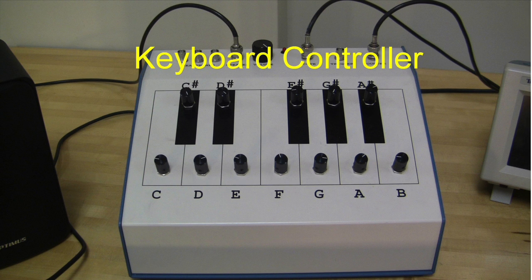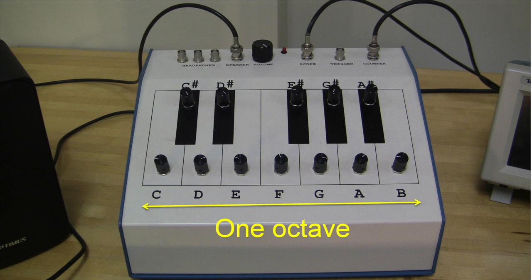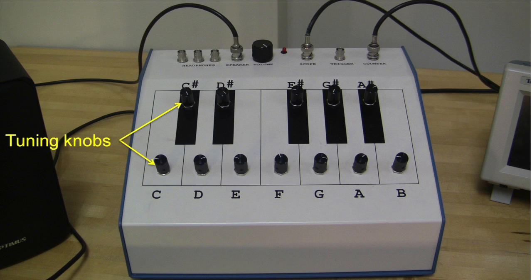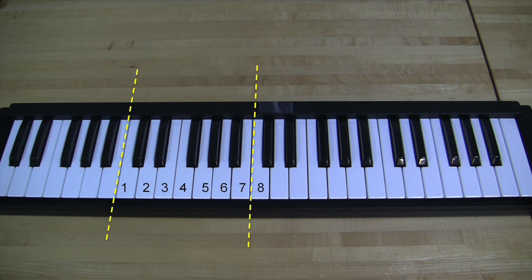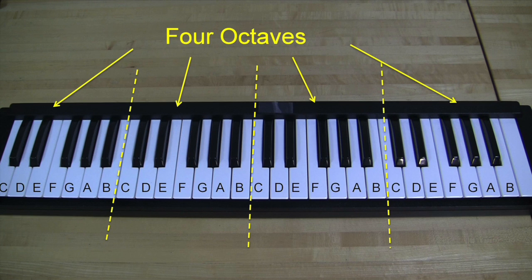A musical scale is a sequence of frequencies and is normally contained in an octave. There are seven intervals between the white keys within an octave. The keyboard controller has knobs which can be used to tune one octave. Each key within an octave can be tuned separately.